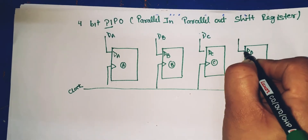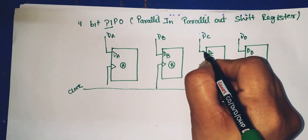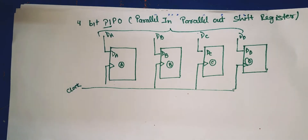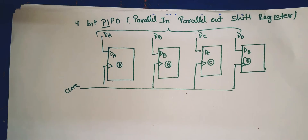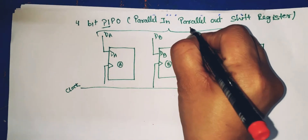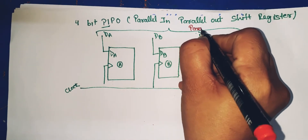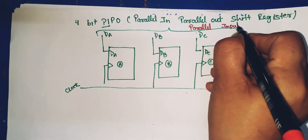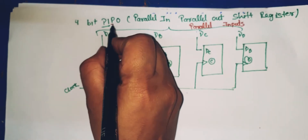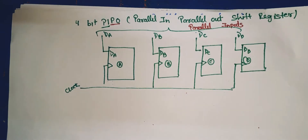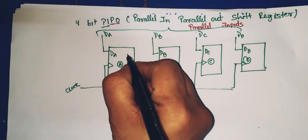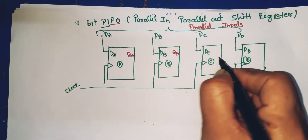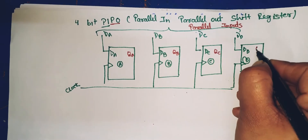Input for DA, input for DB, input for DC, and input for DD — these are the parallel inputs. The output is also parallel: at the same time the output is obtained from all flip-flops simultaneously, giving us QA, QB, QC, and QD.